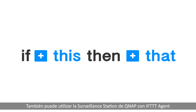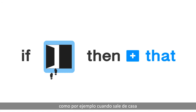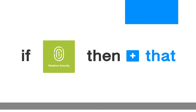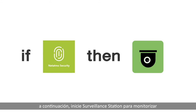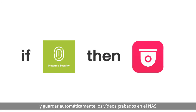You can also use QNAP Surveillance Station with IFTTT agent to create several surveillance scenarios, such as when you leave home, when someone is at the door, or when any motion is detected — then start Surveillance Station to monitor and automatically save recorded videos to the NAS.